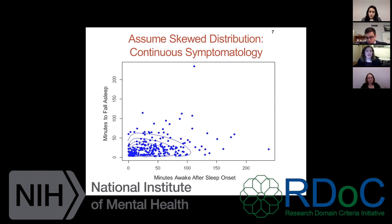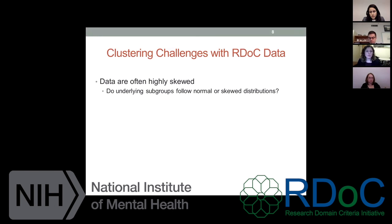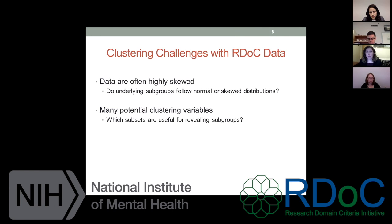In this case, we can use a mixture model based on a skewed distribution — here, based on the skewed normal distribution. If we allow for a skewed distribution in our clustering model, we may actually see that this sample is actually one continuous and skewed sample with no actual discrete subgroups within it. Another issue is that based on the nature of RDoC — which asks us to capture data across multiple different units of analysis — there are just a lot of potential clustering variables, and it's not clear ahead of time which subsets will actually be useful for clustering.